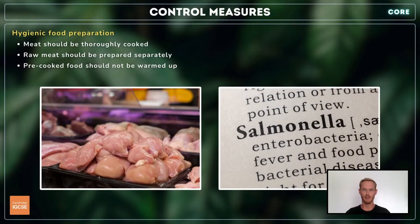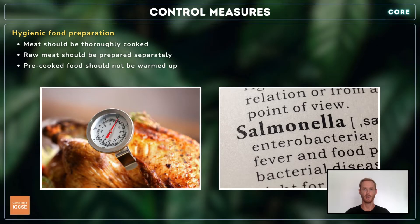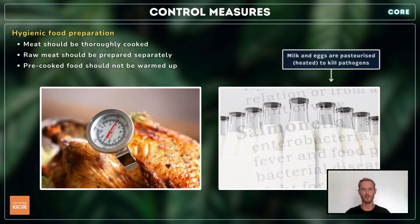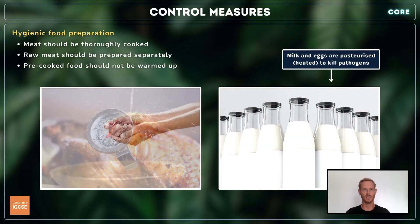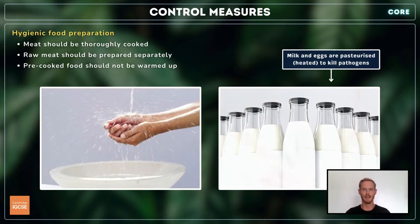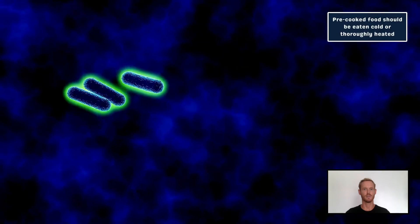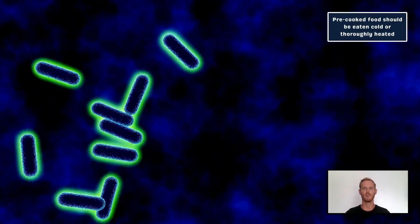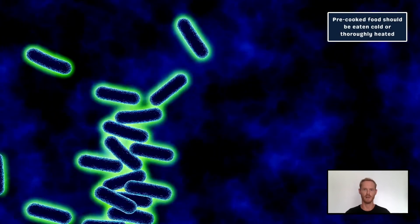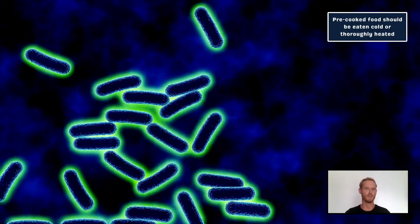Raw meat carries bacteria that may cause food poisoning if consumed. This can be avoided by thoroughly cooking the meat, consuming pasteurised milk and eggs, washing hands regularly, and ensuring that uncooked meat is prepared separately from any food likely to be consumed raw. In addition, previously cooked food should never be rewarmed, as raising the temperature may cause bacteria to proliferate.